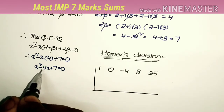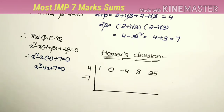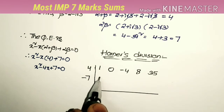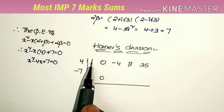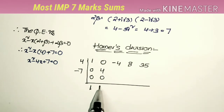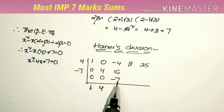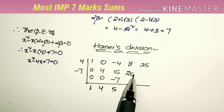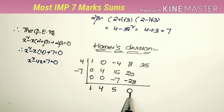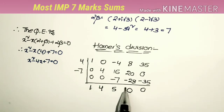Performing the Horner's division: 1+0+0=1; 1×4=4; 0+4+0=4; 4×4=16; 1×(-7)=-7; 16-11=5; 5×4=20; 4×(-7)=-28; 28-28=0; 0×4=0; 5×(-7)=-35; so the remainder is 0, confirming the division is exact.